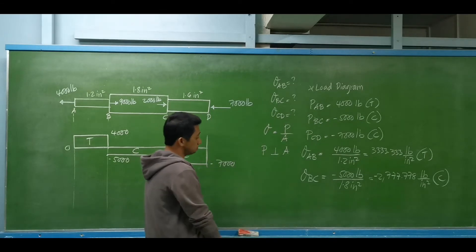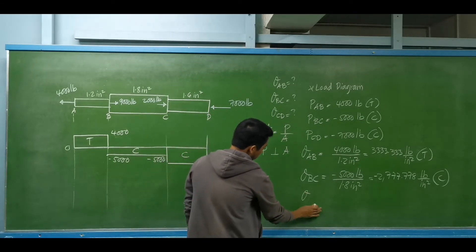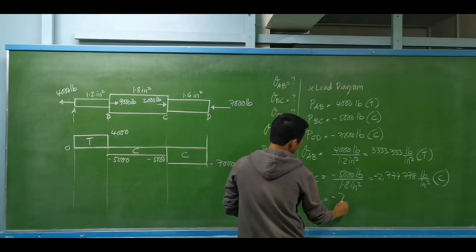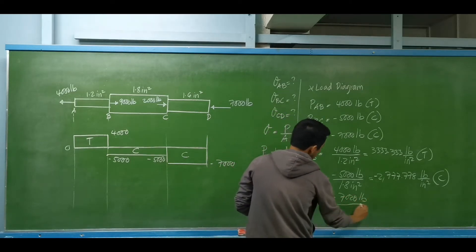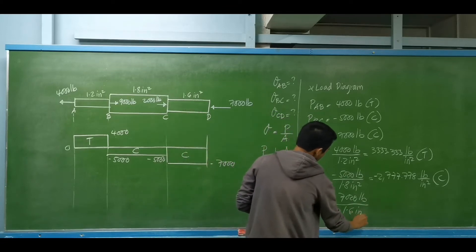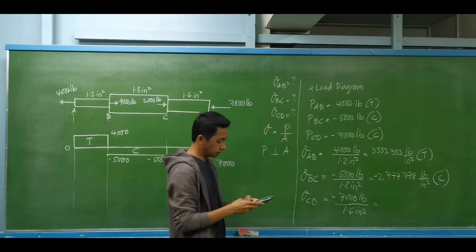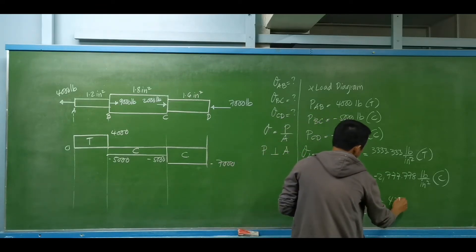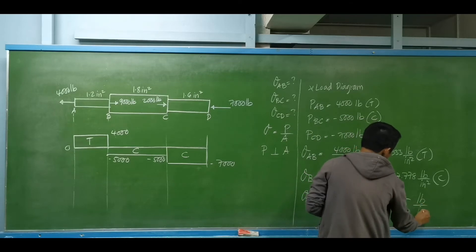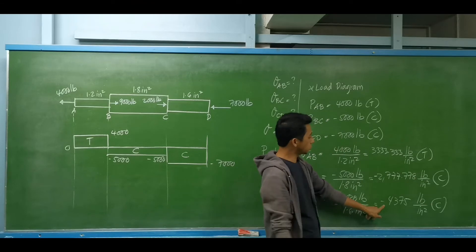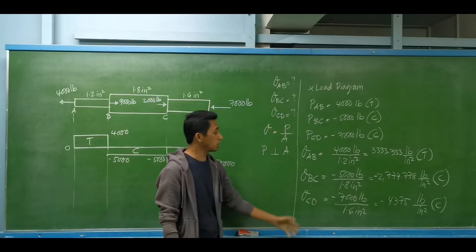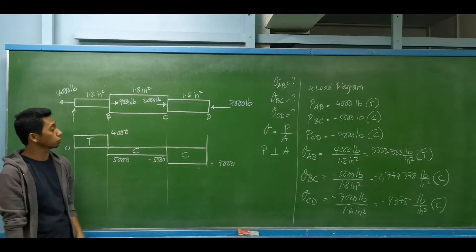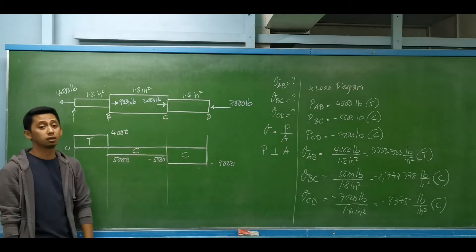For segment CD, the actual stress equals negative 7,000 pounds divided by the cross-sectional area of 1.6 square inches. That is 7,000 divided by 1.6, giving negative 4,375 pounds per square inch (PSI). The negative sign indicates compressive stress. Those are the stresses per segment. It is sometimes easier to determine the net actual force per segment using the load diagram.